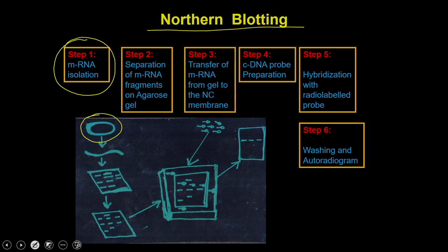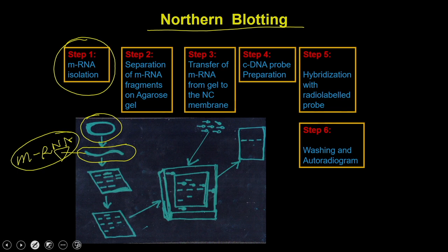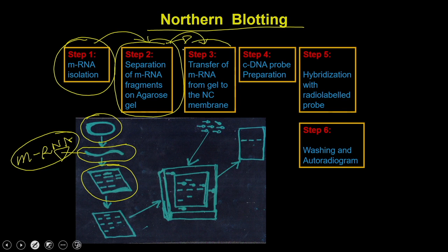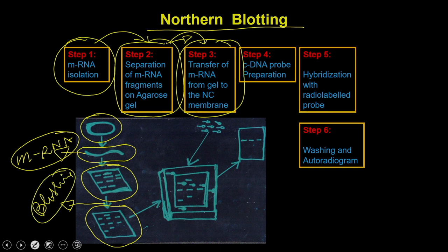What you have to do is take the cells, break them open, and isolate the total pool of RNA. When we talk about RNA here, we are talking about messenger RNA, because these are the RNAs useful for detecting the expression level of a particular gene. Once you have isolated the RNA, you proceed to the second step: separating RNA molecules on an agarose gel. After gel separation, you enter the third stage, where you transfer the messenger RNA from the agarose gel onto a nitrocellulose membrane — this step is called blotting.